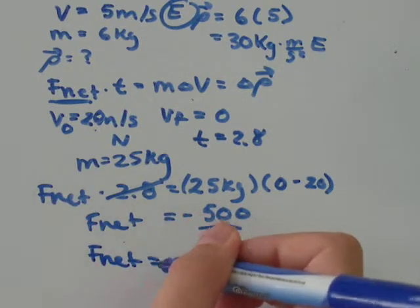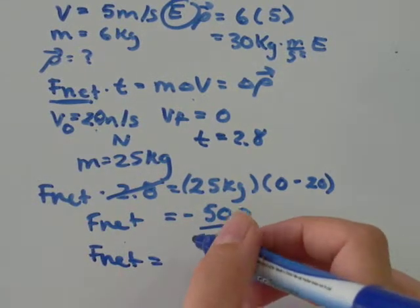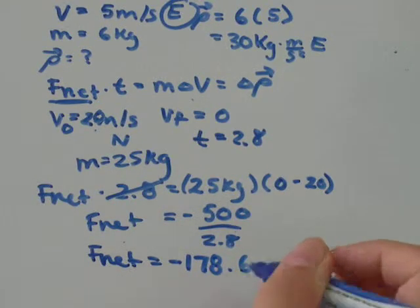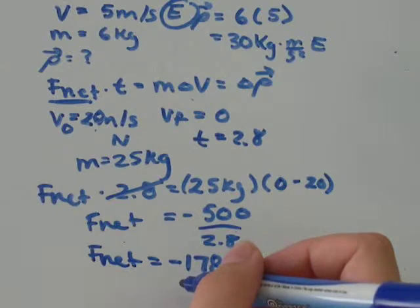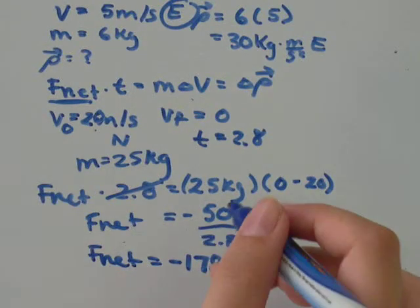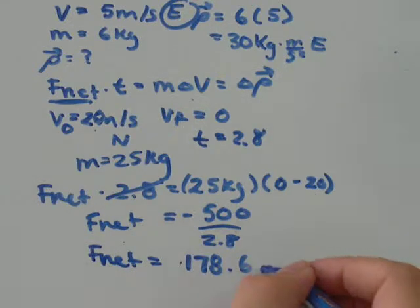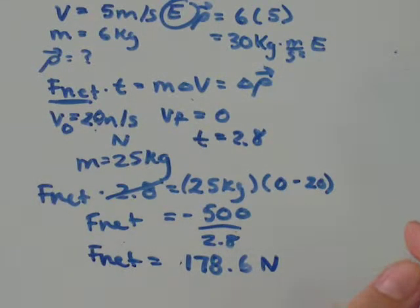And I get F_net is equal to about negative 178.6. The negative sign tells you the direction, so we're going to get rid of that. Force is measured in newtons.